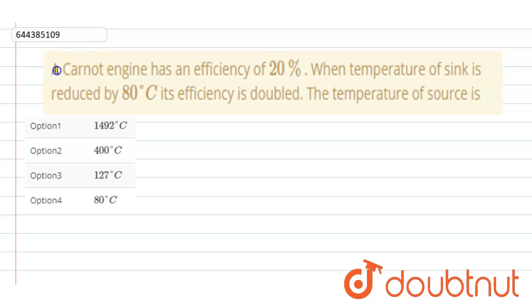Hello student. So the question is: a Carnot engine has an efficiency of 20 percent. When temperature of the sink is reduced by 80 degree Celsius, its efficiency is doubled. The temperature of the source is?